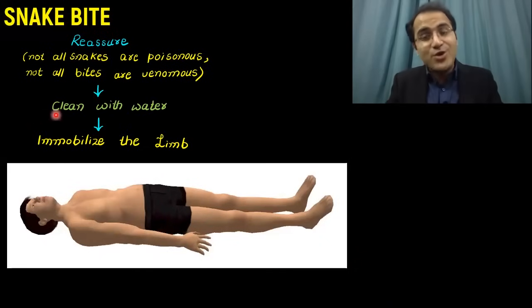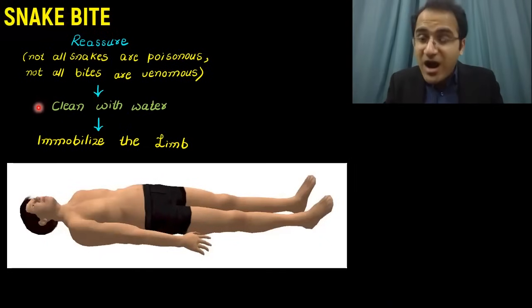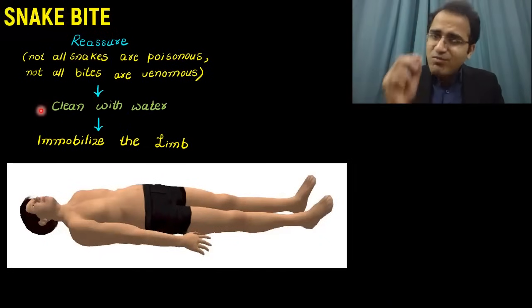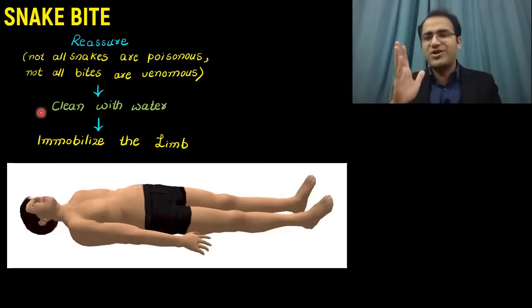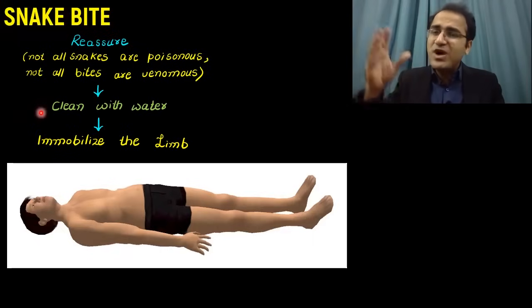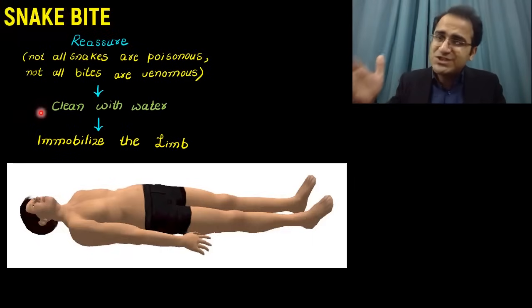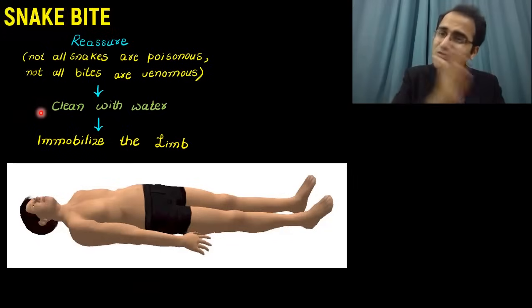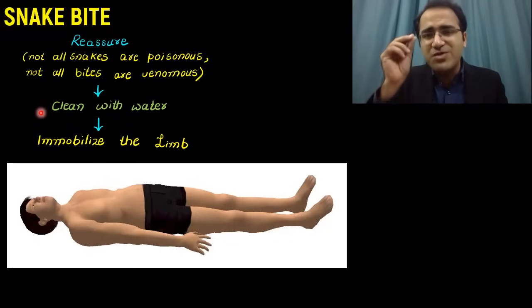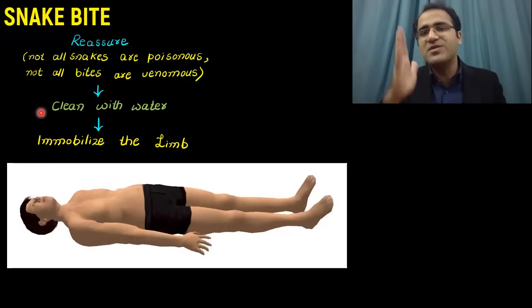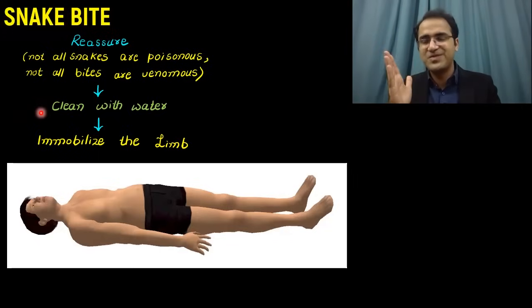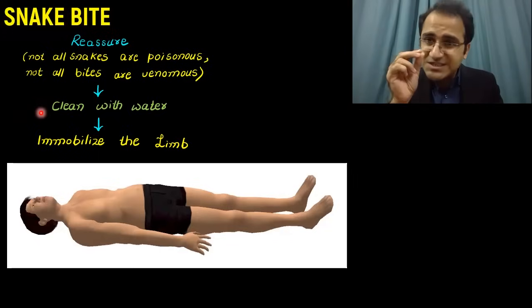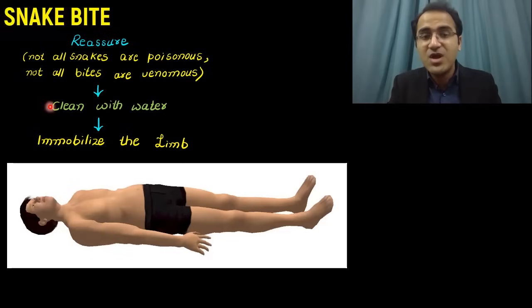Then you clean the wound with simple water. After that, immobilizing the limb is very important — immobilizing the limb while the patient is being transported from the site of the bite to the hospital. This is where people make common mistakes, and understanding it is very important.